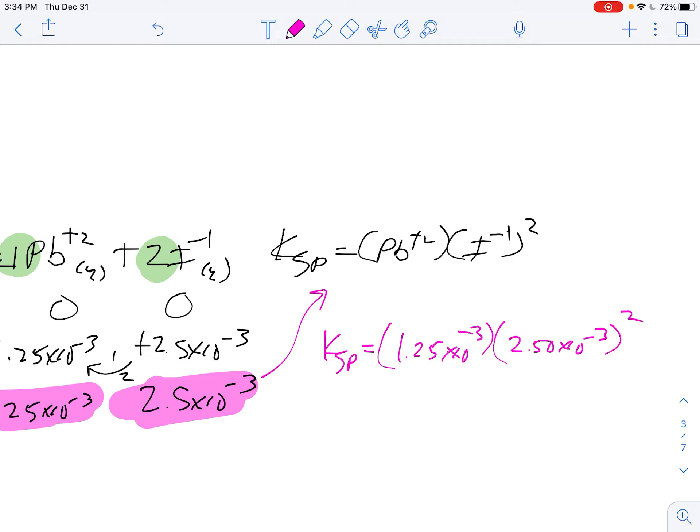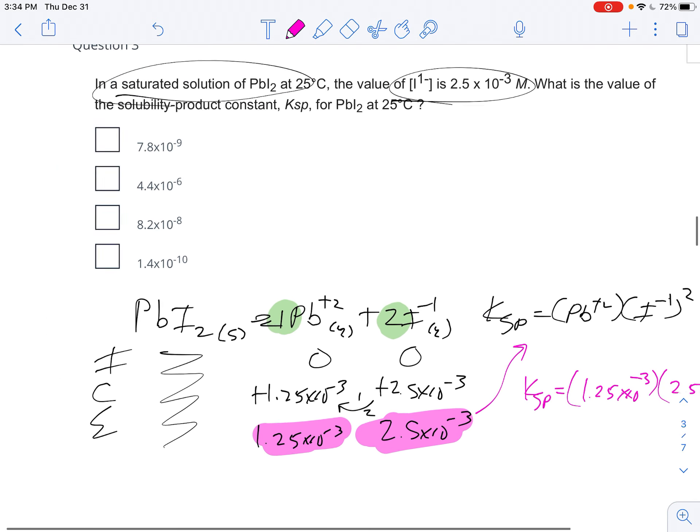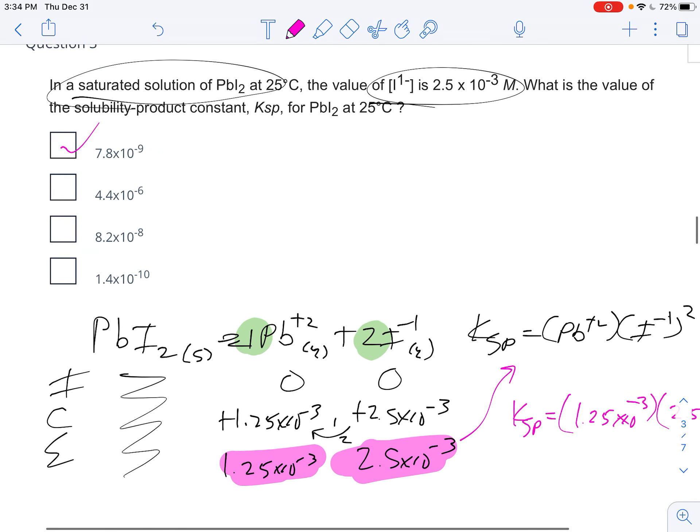So you get out your calculator: 2.5 times 10 to the negative third, 2.5 times 10 to the negative third, and 1.25 times 10 to the negative third. Assuming I did my math right, it's about 7.8 times 10 to the negative ninth. So there you go, that's your answer.